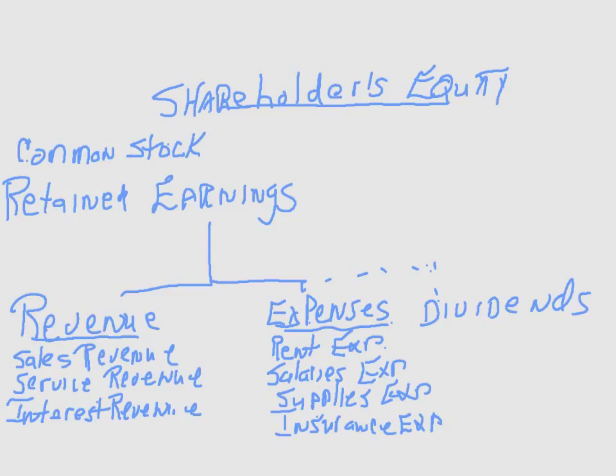There are only about three or four revenue accounts. Sales revenue, if the company sells a product. Service revenue, if the company also provides a service. Interest revenue, if the company has investments that provide interest — those are reported in an interest revenue account. Some of the expenses include rent expense, salaries expense, supplies expense — when we use up some of the supplies we had as assets. Insurance expense, when we use up some of the prepaid insurance. And any other kind of expense — advertising, marketing, delivery expense — all come under a separate expense account under the general heading of expenses.